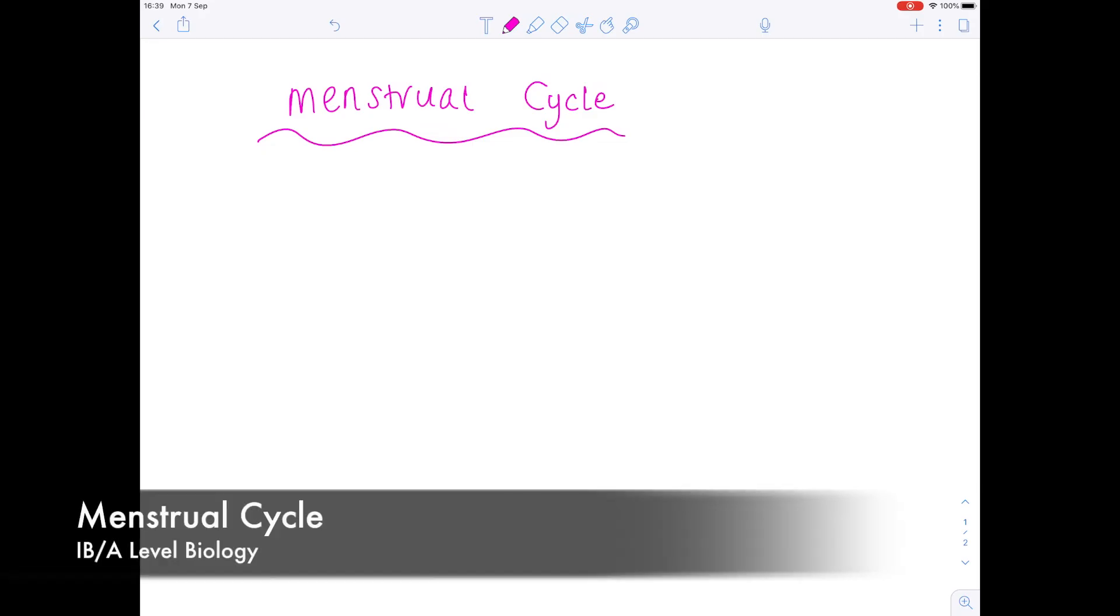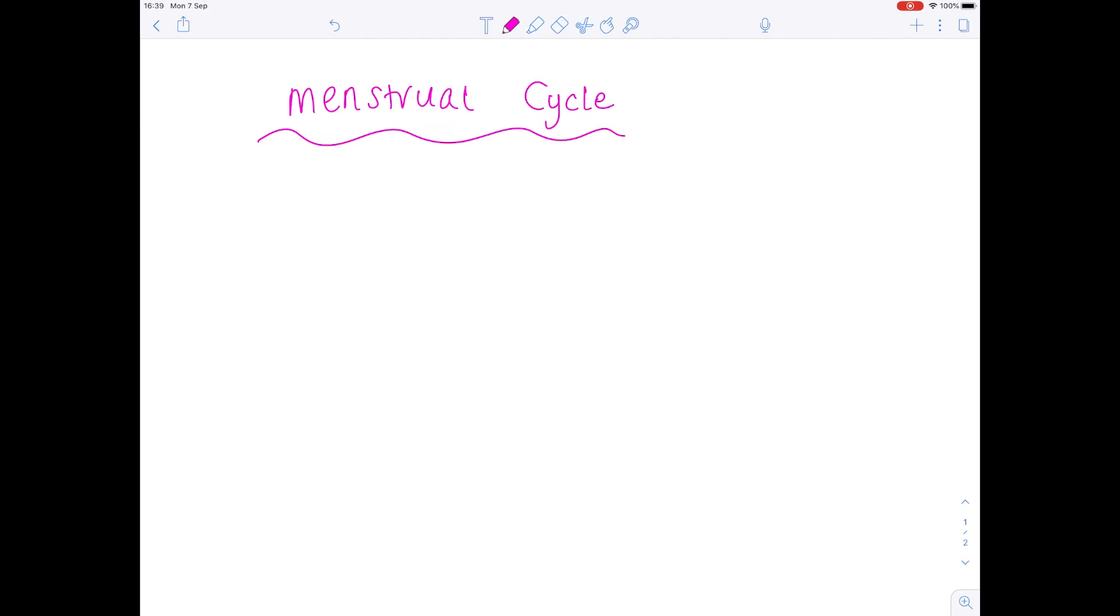In this A-level IB biology video, we're going to be talking about the menstrual cycle in great detail. Effectively, the menstrual cycle is all about the changes that occur inside a woman's body when she menstruates or has her period. So we'll be talking about the different hormones which control that.